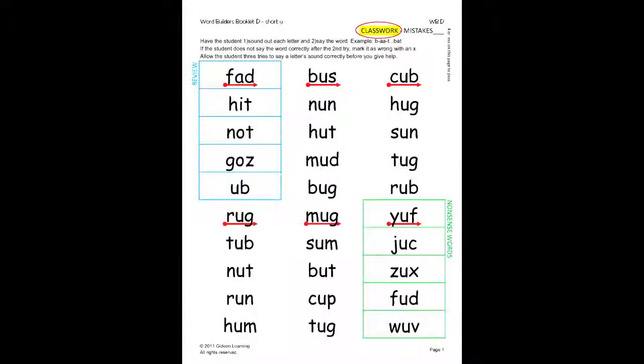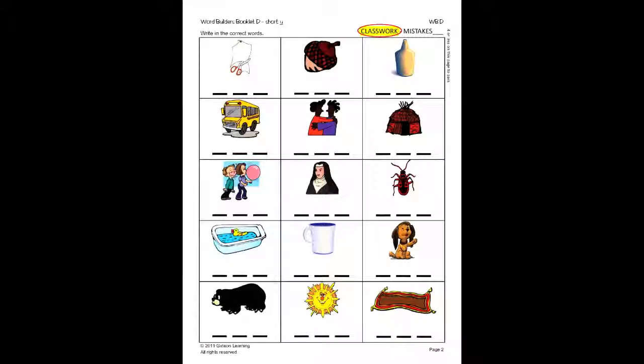After each book is completed, there will be a classwork test done in class with a Gideon instructor to determine mastery so the student may move on. The student must make four or less mistakes in order to pass.